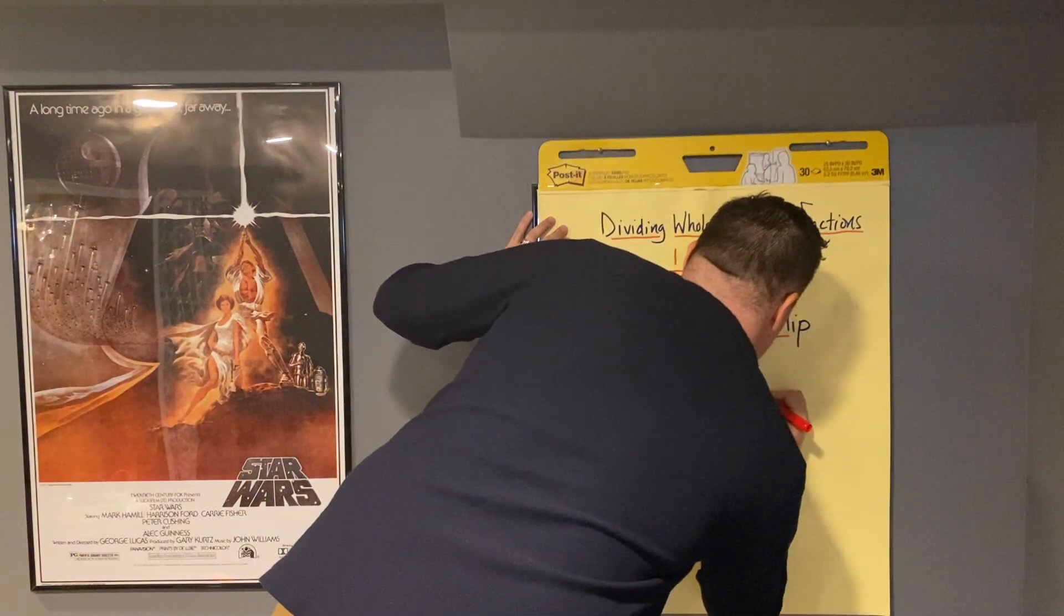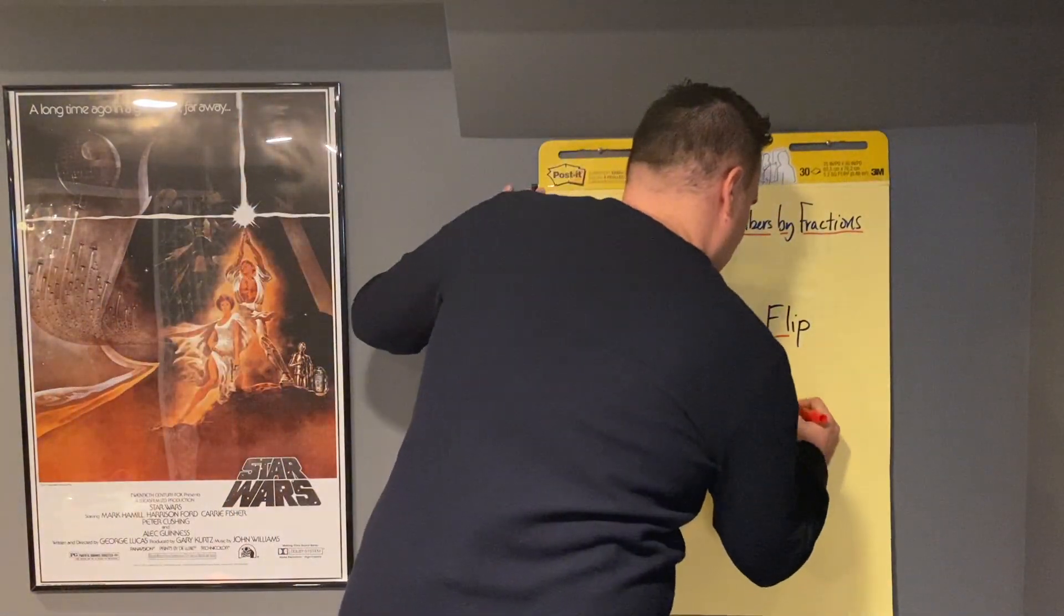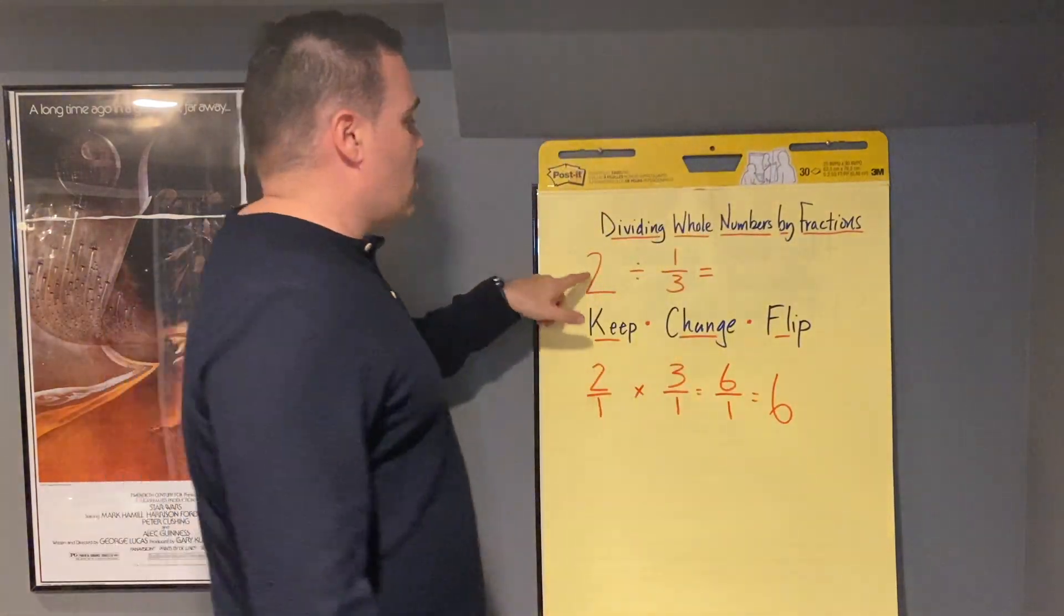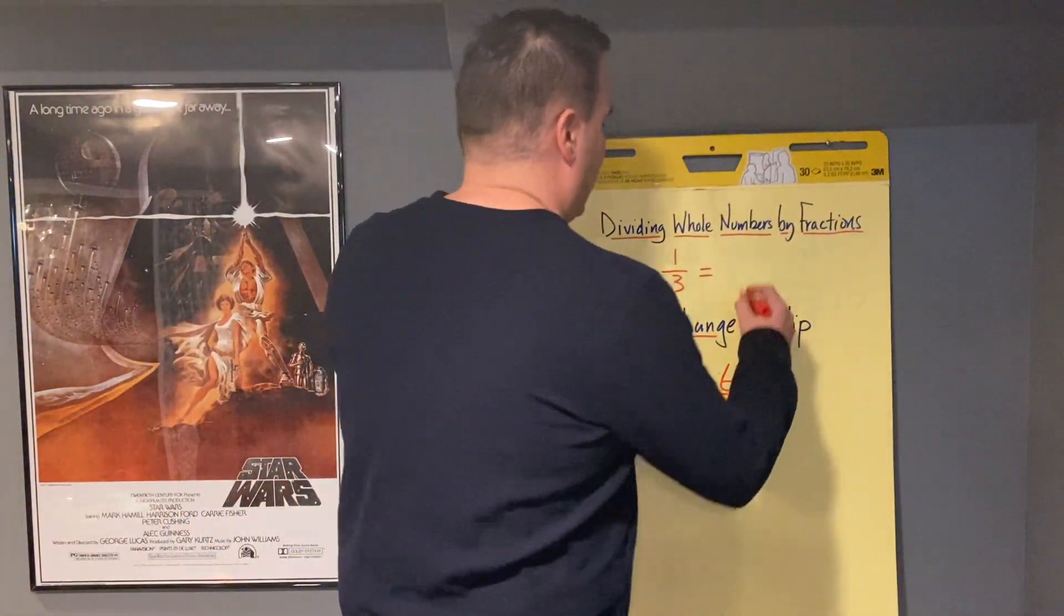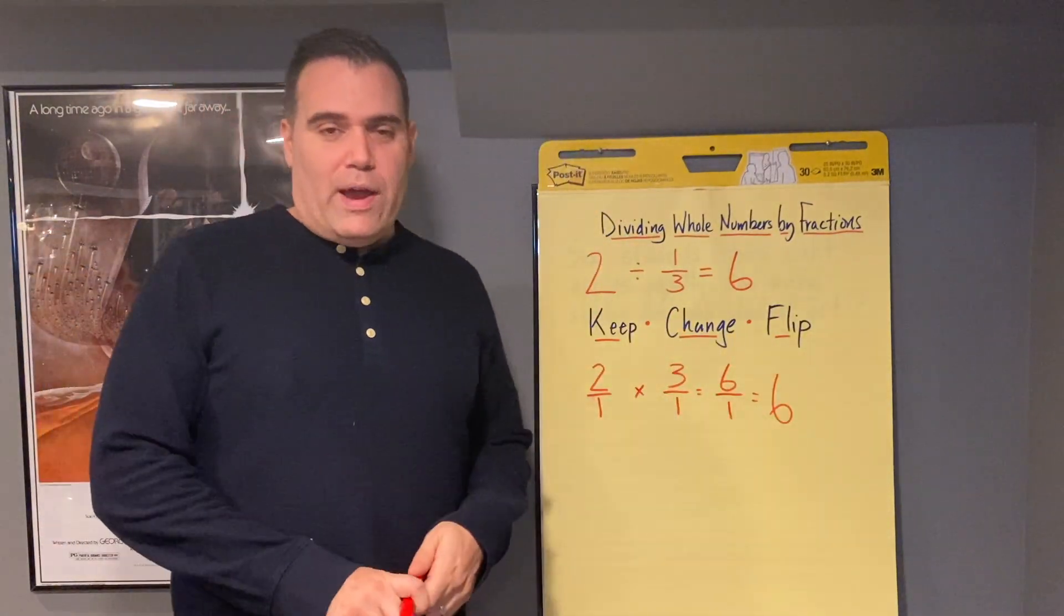Hardest question of the year. And of course, 6 over 1 is equal to the whole number 6. So we can say that 2 divided by 1 third equals 6.